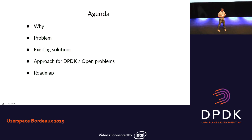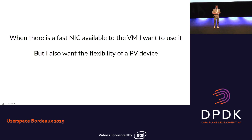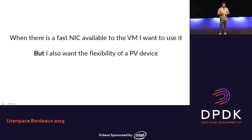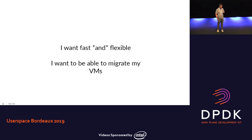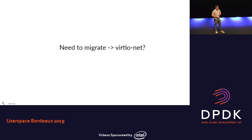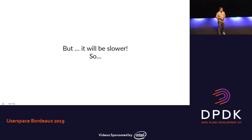The problem is: I have a virtual function assigned to a virtual machine and I want to use it because it gives me fast networking, but at the same time I might want to be able to migrate my virtual machine to another system. That means I also need the flexibility of a paravirtualized device like virtio. I want fast and flexible — I also want to be able to migrate my VMs. Using virtio means traffic will not be as fast as via the virtual function: lower throughput, higher latency, and more CPU cycles.